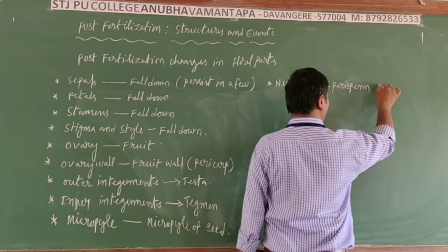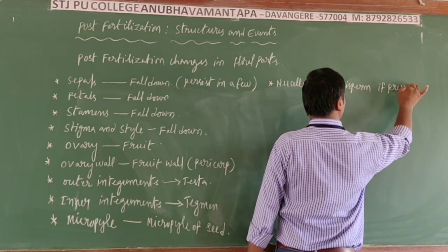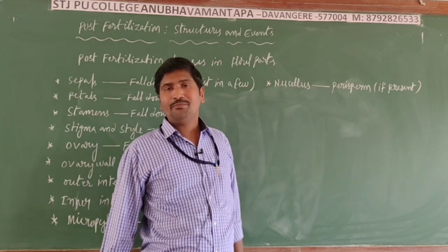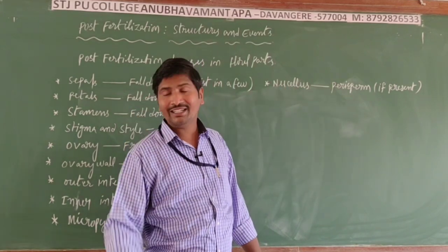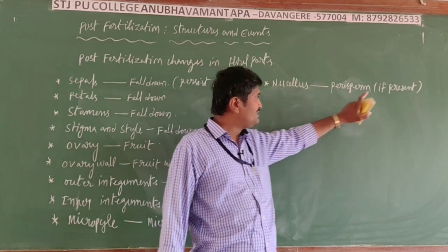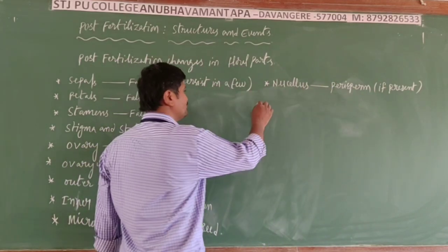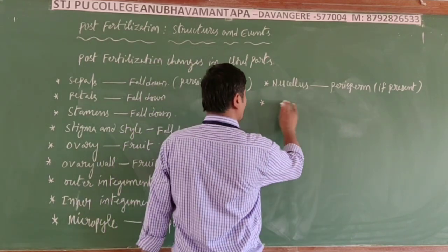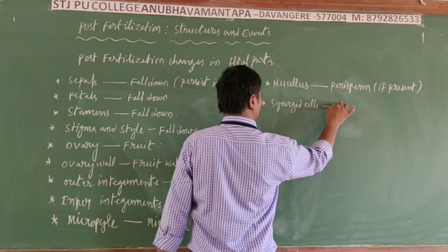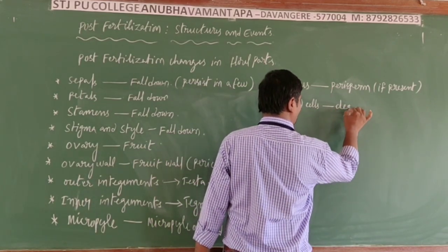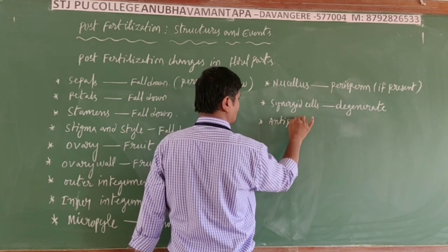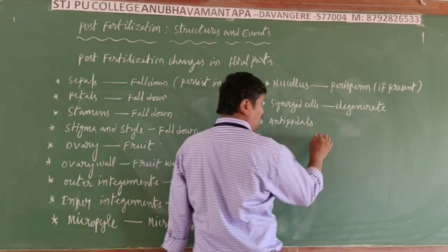Generally, the nucellus is degenerated after fertilization, but if present in the structure of the ovule, it is developed into the perisperm. The synergid cells are generally degenerated after fertilization. Even the antipodal cells also degenerate after fertilization.